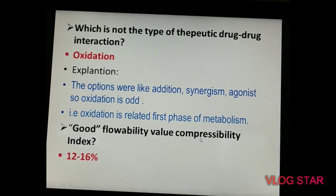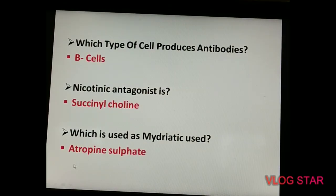Good flowability is indicated by a compressibility index of 12 to 16 percent. Which type of cell produces antibodies? Beta cells produce antibodies. A nicotinic antagonist is succinylcholine, and the mydriatic agent is atropine sulfate.